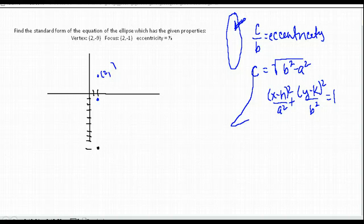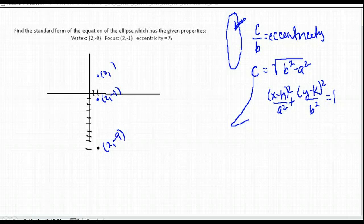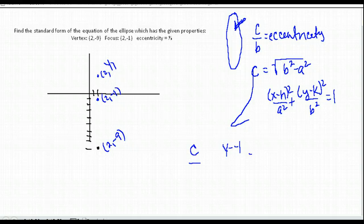We need to find the y-value of our center. The focus point is at (2, −1) and the vertex is at (2, −9). We can express C as |y − (−1)| = y + 1, and B as |y − (−9)| = y + 9.